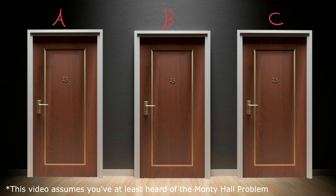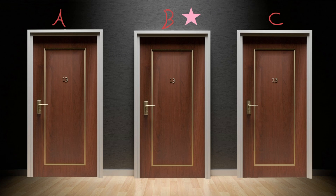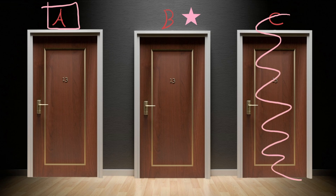The idea of the Monty Hall problem is that you have three doors to choose from. One of those doors is the correct door with a prize. You pick a door, the host reveals a different door to not be correct, and now you're left with a decision of whether or not to switch doors.